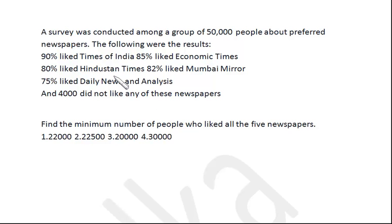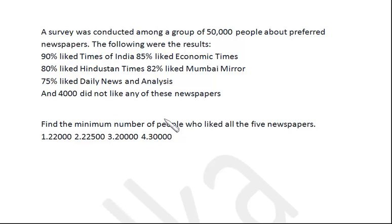We have 71%. Now add the next newspaper at 82%: 71 plus 82 minus 92. Simplifying: 82 minus 92 is minus 10, so 71 minus 10 is 61. Now 61% of people like all four newspapers. Next, add Daily News and Analysis at 75%: 61 plus 75 minus 92. Simplifying: 75 minus 92 is minus 17, so 61 minus 17 is 44. This 44% of people like all five newspapers — this is our minimum.